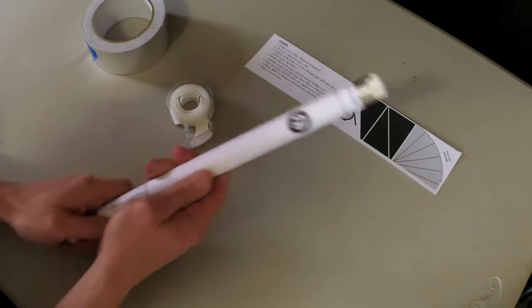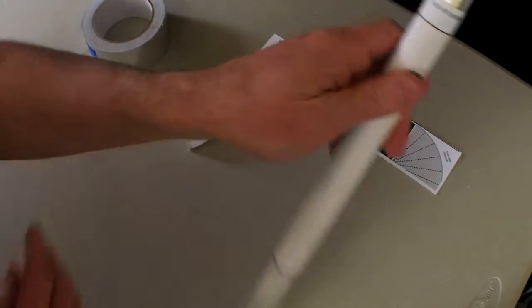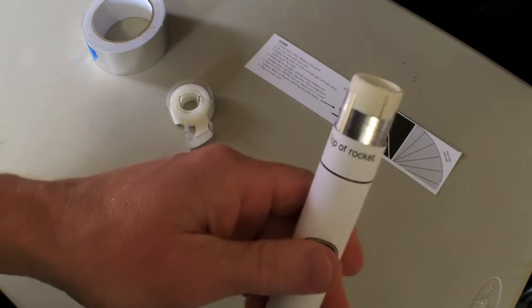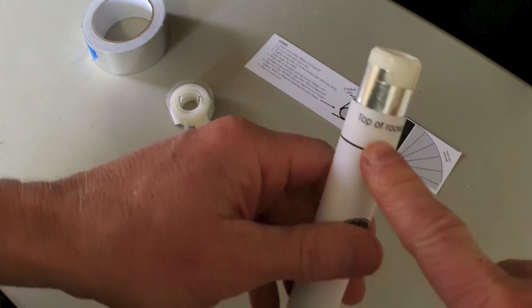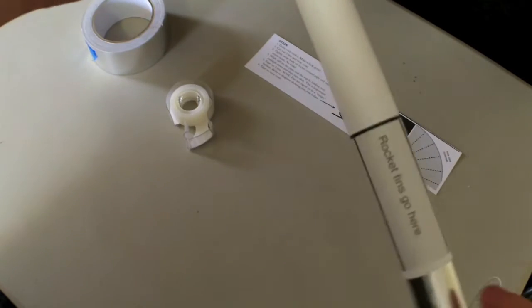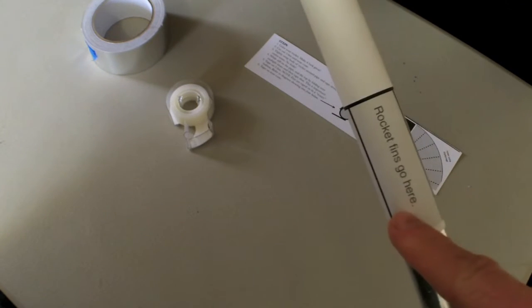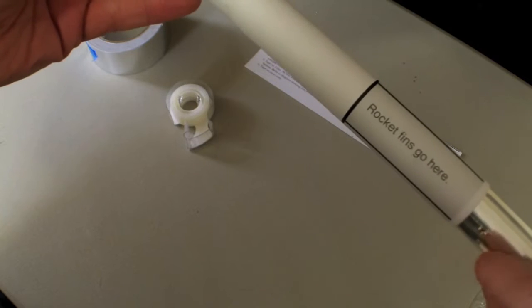The next step is, you'll see here, it says this top of the rocket, and this is the bottom of the rocket where the tail fins will go here, rocket fins go here.